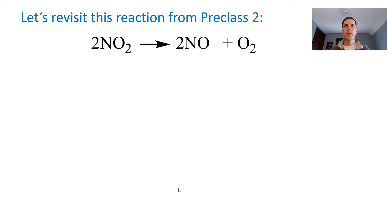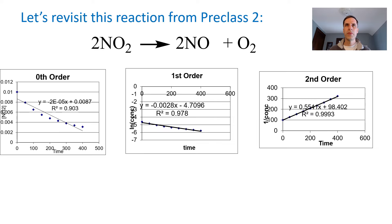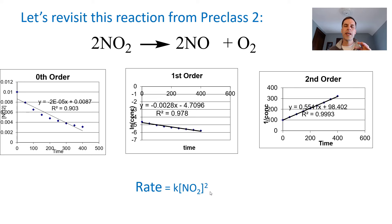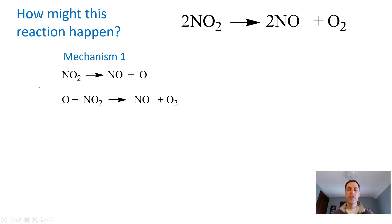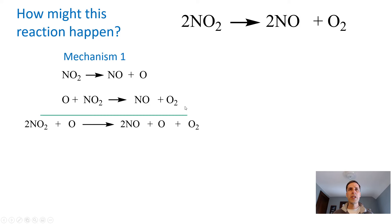Let's revisit the reaction of two molecules of NO2 forming two molecules of NO plus O2. We previously graphed data and found the rate equals k times [NO2]², a second-order reaction. One possible mechanism is that one NO2 falls apart — an N–O bond breaks giving a free oxygen atom, which then reacts with another NO2 to form NO and O2. Adding those steps up and canceling the oxygen intermediate gives us the same overall reaction, so this is a viable mechanism.